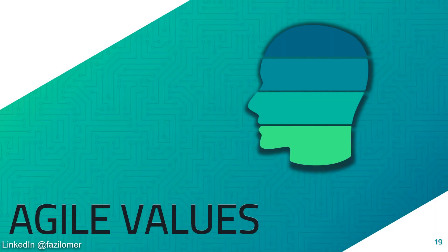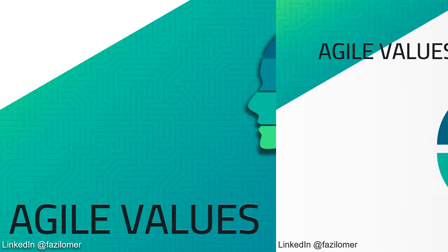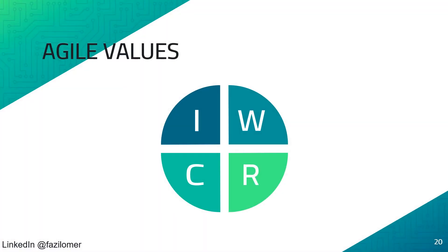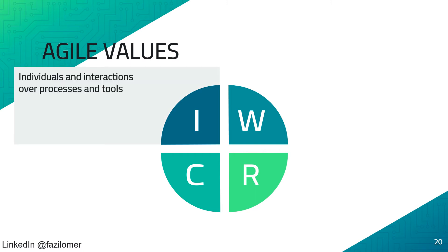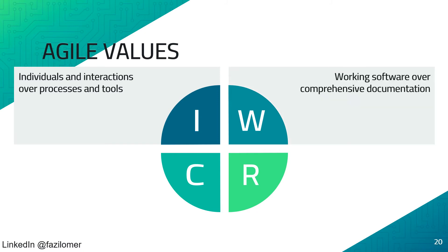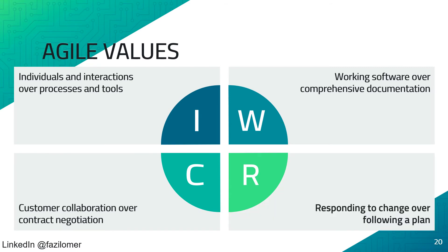To implement the Agile approach of project management, what we need is an Agile mindset, defined by its core values. The four Agile values are: individuals and interactions over processes and tools; working software over comprehensive documentation; customer collaboration over contract negotiation; and responding to change over following a plan. Implementing these Agile values in a construction project has challenges due to the conditions of contract in any construction project.